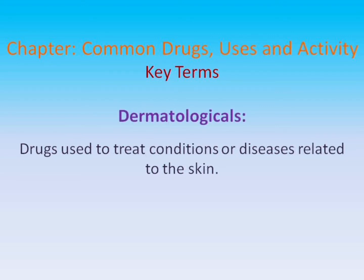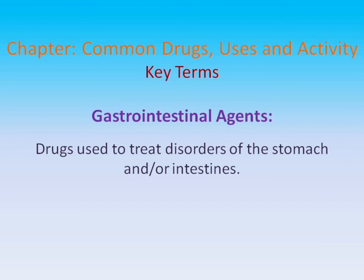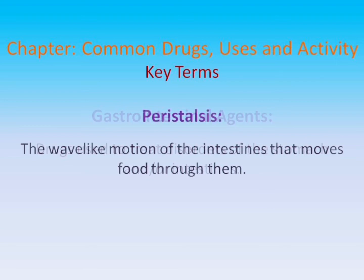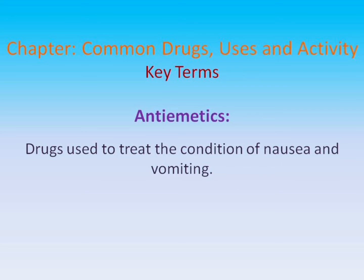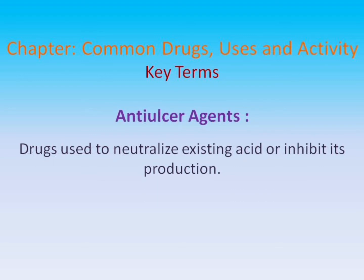Dermatologicals: Drugs used to treat conditions or diseases related to the skin. Gastrointestinal agents: Drugs used to treat disorders of the stomach and/or intestines. Peristalsis: The wave-like motion of the intestines that moves food through them. Antidiarrheals or antiperistaltics: Drugs used to slow the movement of the intestinal contents to allow for greater water and electrolyte absorption. Antiemetics: Drugs used to treat the condition of nausea and vomiting. Anti-ulcer agents: Drugs used to neutralize existing acid or inhibit its production.